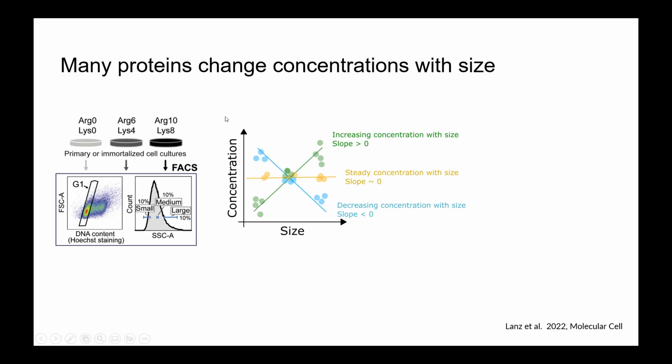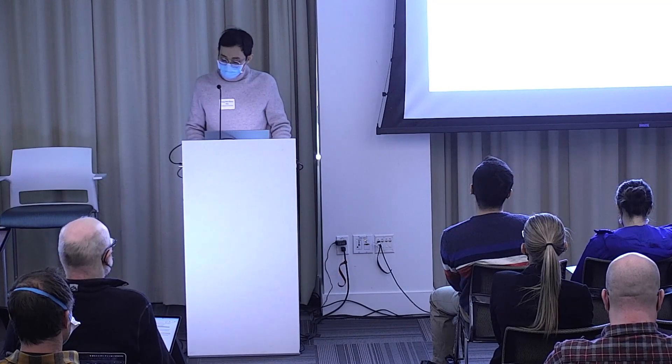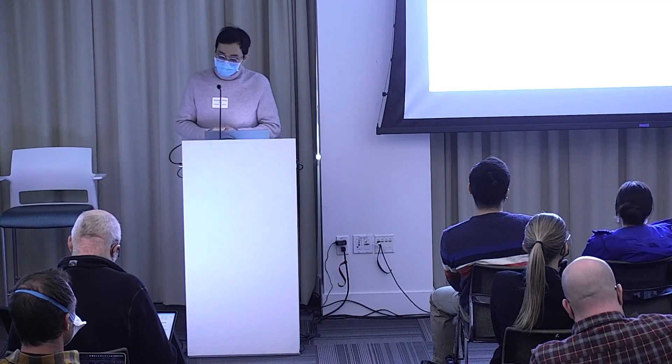If the slope is near zero, it means the protein maintains a steady concentration with cell size. If it's greater than zero, it has increasing concentration, and if it's less than zero, it has decreasing concentration with cell size. When they did this experiment, we found that many proteins maintained steady concentration as expected, but we also found, to our surprise, that many proteins fell across the spectrum of increasing and decreasing concentration — and this was highly replicable between experiments.